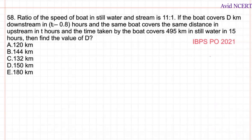The ratio of speed of the boat in still water to stream is 11 is to 1. The boat covers d kilometers downstream in t minus 0.8 hours, and the same boat covers the same distance upstream in t hours. The time taken by the boat to cover 495 kilometers in still water is 15 hours. Find the value of t.